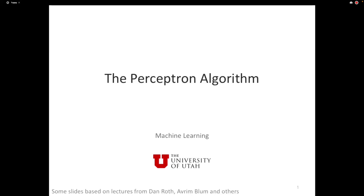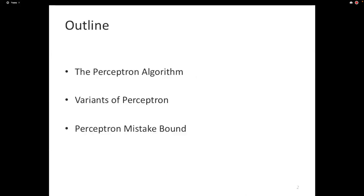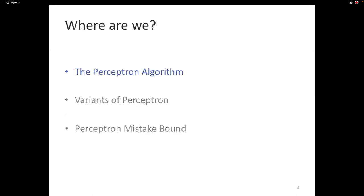We're going to talk about the perceptron algorithm. The perceptron algorithm is the first of several learning algorithms that you'll encounter, all of which learn linear classifiers. The perceptron might be the oldest of that class. This unit is going to cover the perceptron algorithm itself, the mechanics of it, and some variants of the perceptron algorithm. With those, you'll have everything you need to implement everything in your homework. In the next lecture, we'll be looking at the perceptron mistake bound. So let's dive into the perceptron algorithm.